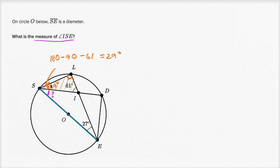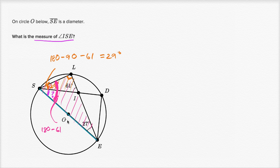And then we could look at this larger triangle right over here to figure out this entire angle. If we know this entire angle, you subtract 29, then you figure out angle ISE. So this measure right over here, plus 90 degrees, plus 27 degrees is going to be equal to 180, because they're the interior angles of triangle SLE. So this angle right over here is going to be 180 minus 90 minus 27, which gives us — 180 minus 90 is 90, and 90 minus 27 is 63 degrees.